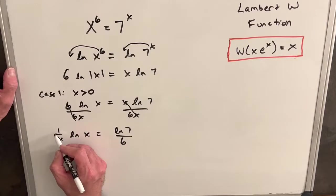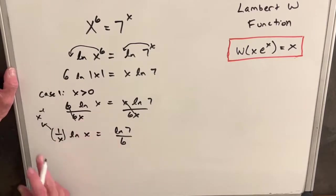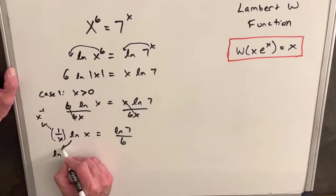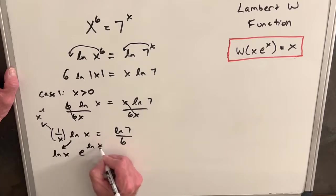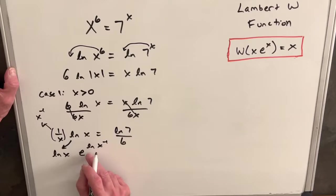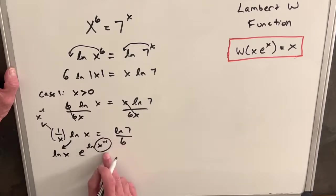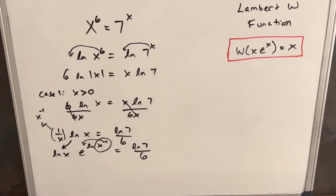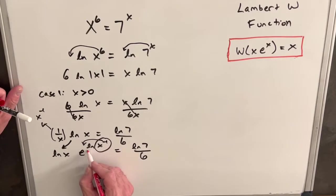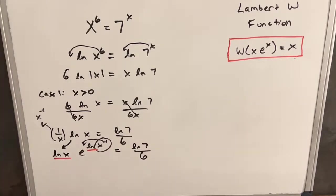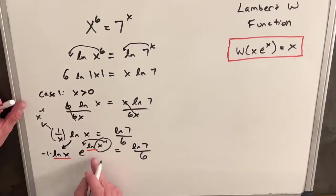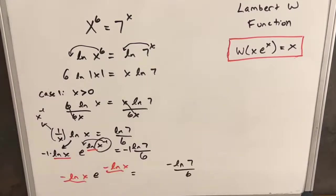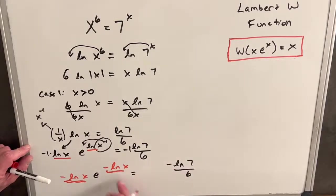Let's rewrite 1/x as x to the negative 1. Then we bring the ln x over and write it as ln(x^{-1}), remembering that e and ln essentially cancel, which is how we can write x to the negative 1 this way. We bring the negative 1 to the front, and we notice we're getting close to the symmetry we want — where the coefficient and the exponent match. We multiply both sides by negative 1, and now what we have in red is exactly the same on both sides: we're precisely in the format needed for the Lambert W function.